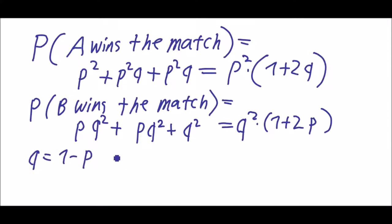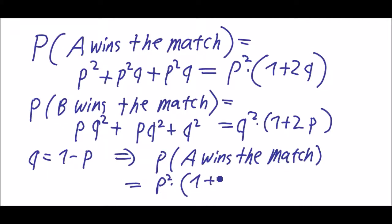We can also write that P(A wins the match) is p squared times 1 plus 2 times 1 minus p, which is minus 2p to the 3 plus 3p squared. This has only p as a variable.